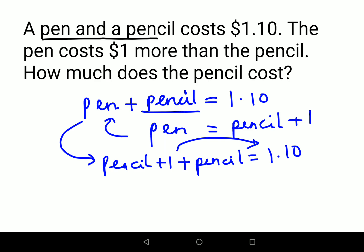Now take this one to the other side and you'll have 2 pencil. We'll subtract it from 1.10 and this one will get subtracted. So 2 pencils equals 0.10.